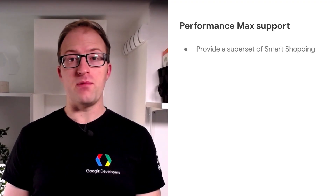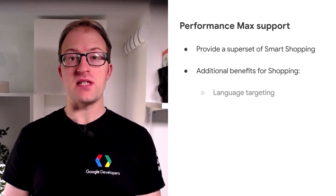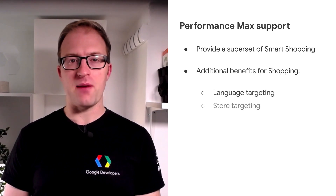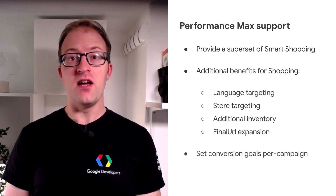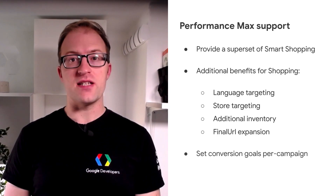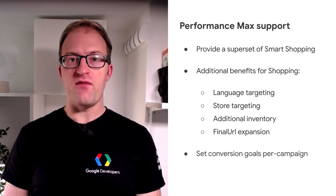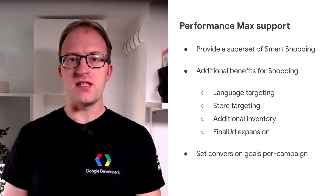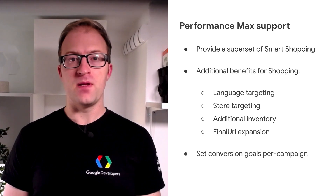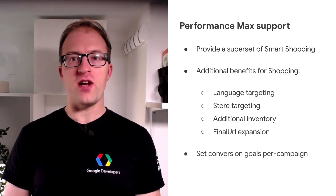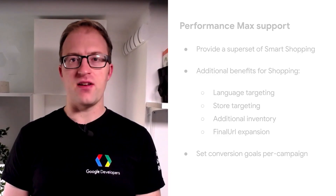For Google Shopping developers, Performance Max represents a superset of smart shopping campaigns and includes some additional benefits such as language targeting, store targeting, additional inventory, and final URL expansion. It also permits the setting of conversion goals on a per campaign basis in addition to per customer. To understand how to use them, we've created a guide on our developer site, so go ahead and check it out.